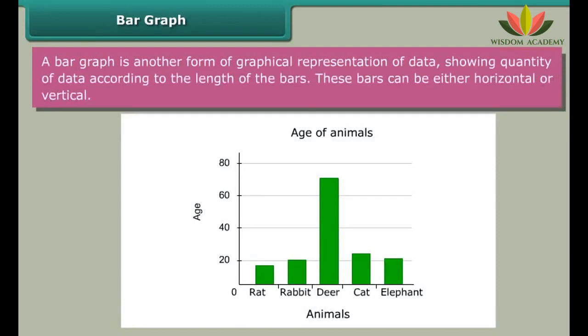Bar graph: A bar graph is another form of graphical representation of data showing quantity of data according to the length of the bars. These bars can be either horizontal or vertical. This bar graph represents ages of different animals. From this bar graph we can get the age of animals.